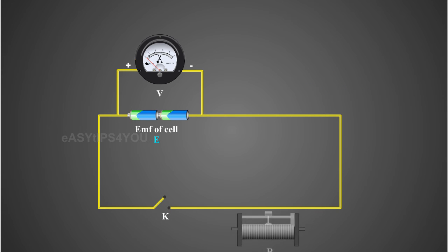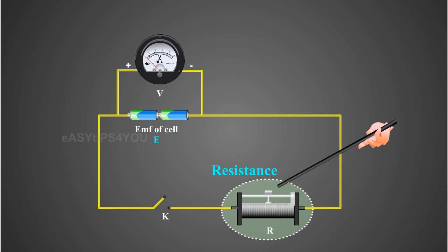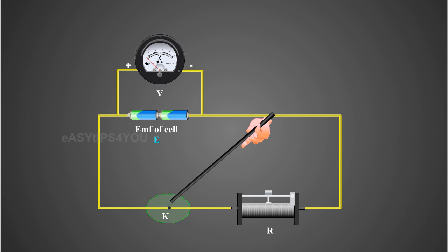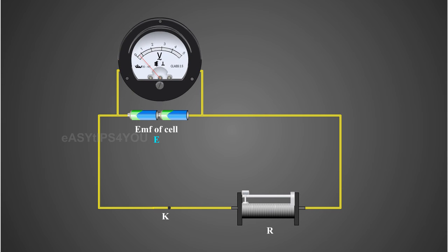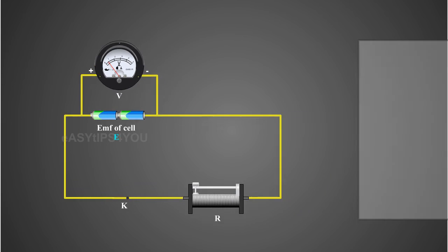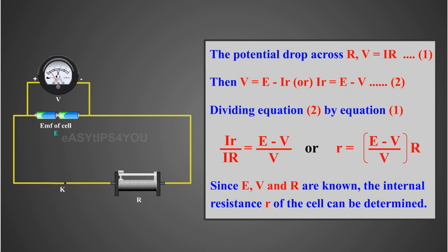A small value of resistance R is included in the external circuit and key K is closed. The potential difference across R is equal to the potential difference across the cell V. The potential drop across R: V equals IR.